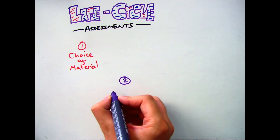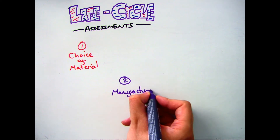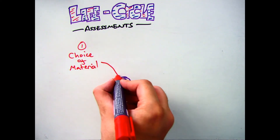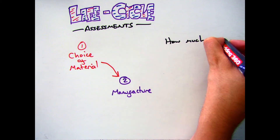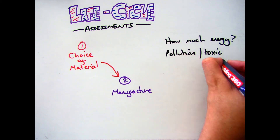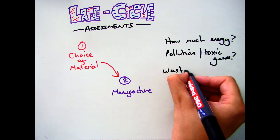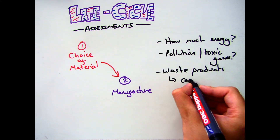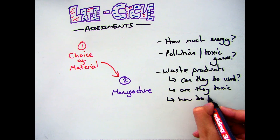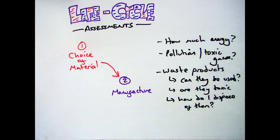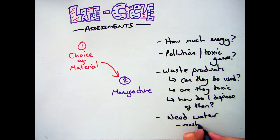Once you've decided on the choice of material, the next step is to look at the manufacturing process. Here again you look at the energy needed to make it, whether it's going to produce any pollution, greenhouse gases, or toxic gases, and if you do have waste products, can they be used? Are they useful? Are they toxic? If they are, how do you dispose of them safely? For example, if water is used you've got to make sure it isn't polluted when you put it back into the lakes.